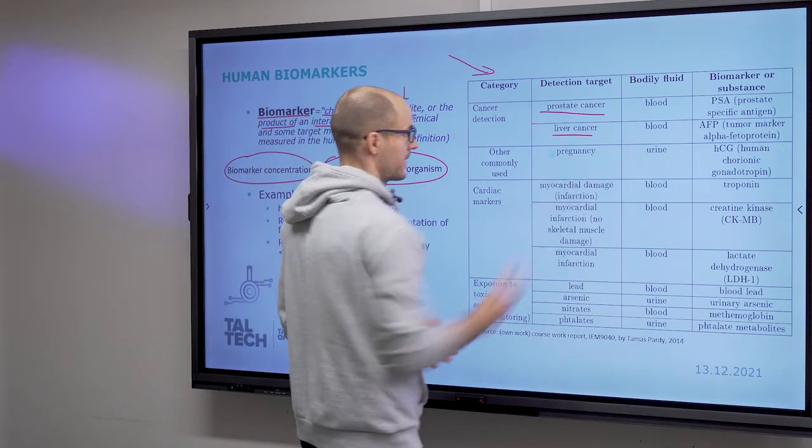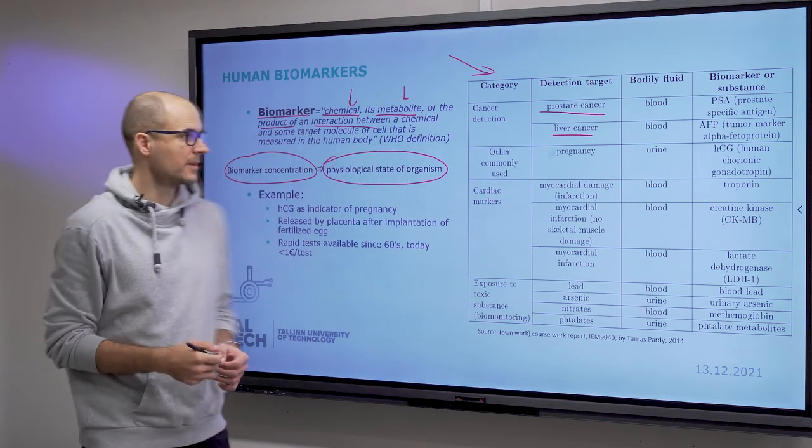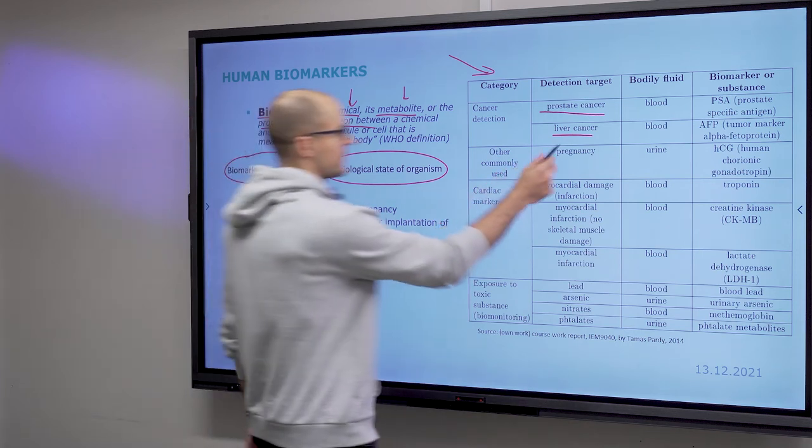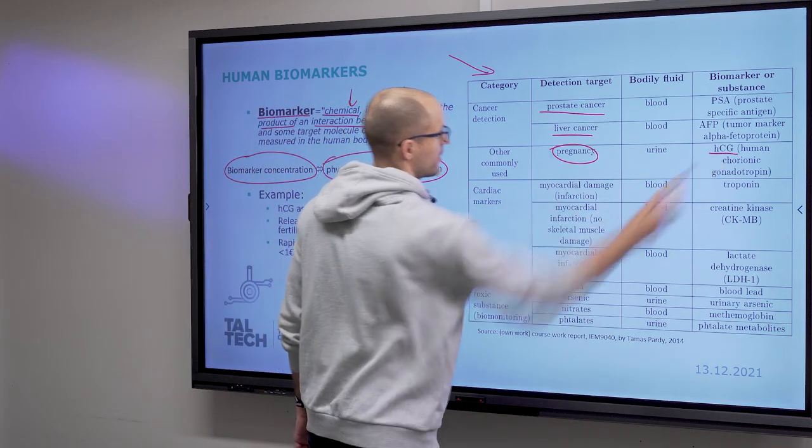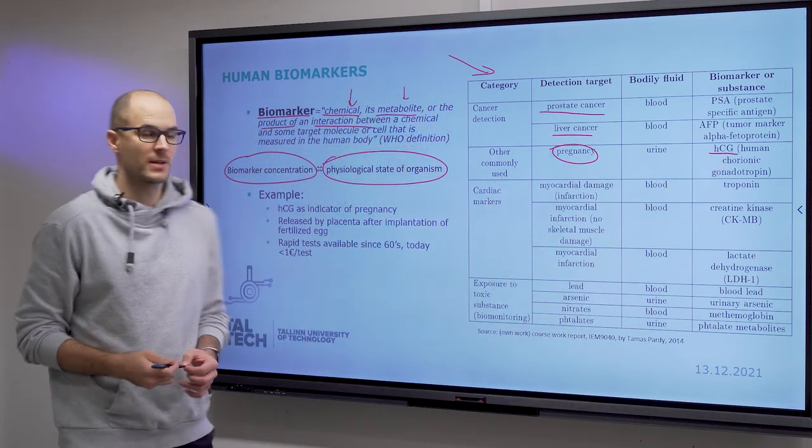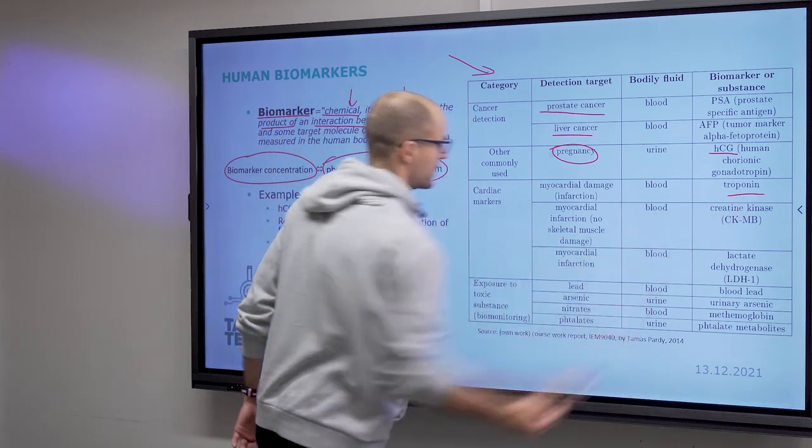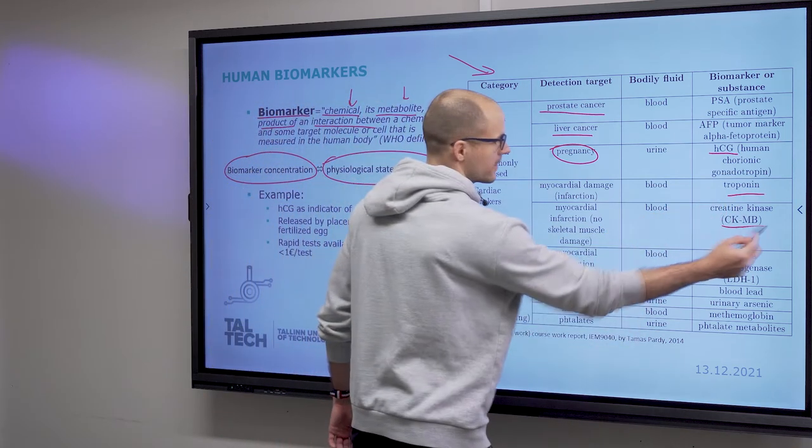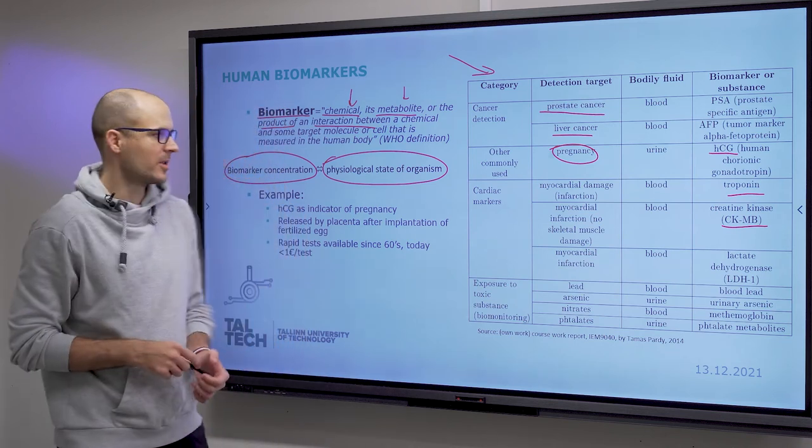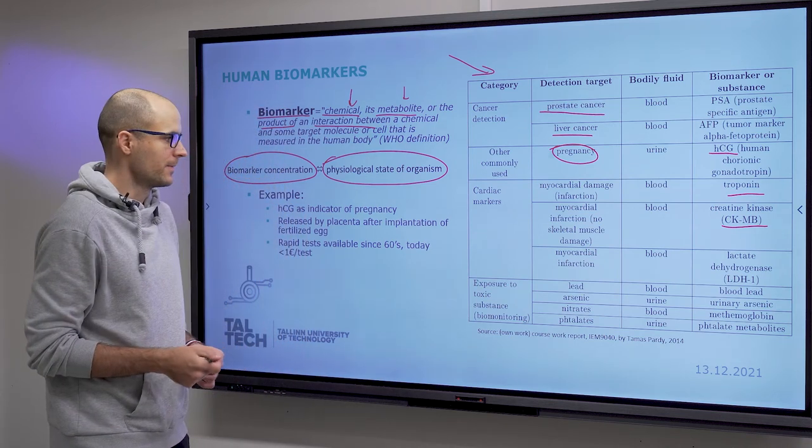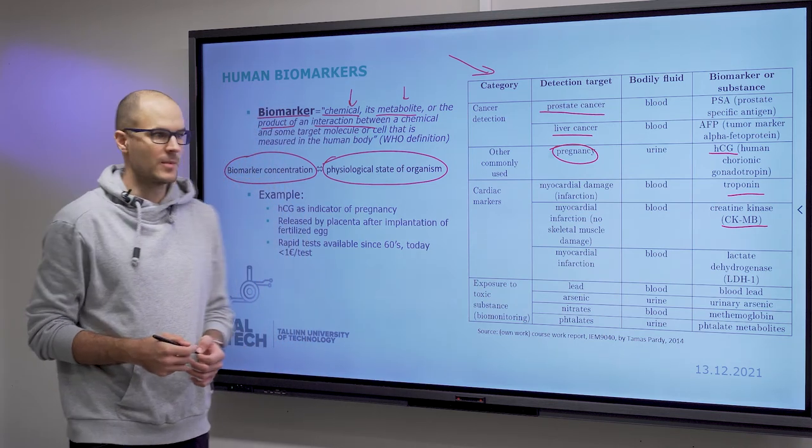For pregnancy, the biomarker is human chorionic gonadotropin—that's what the pregnancy test detects. If you detect a high concentration of troponin or creatine kinase in blood, then that's an indication of heart muscle damage.